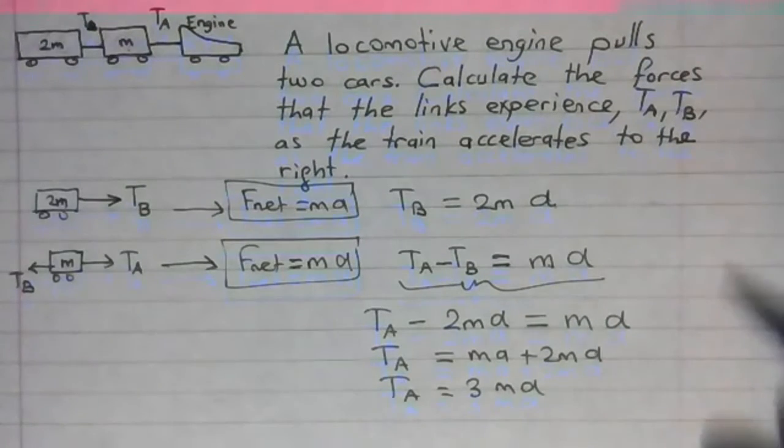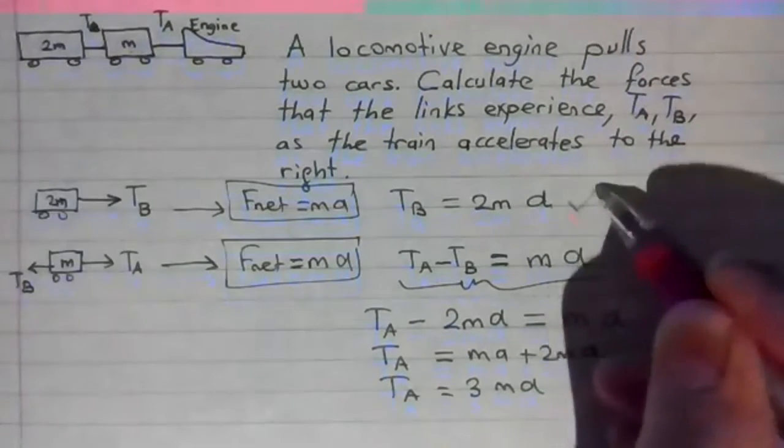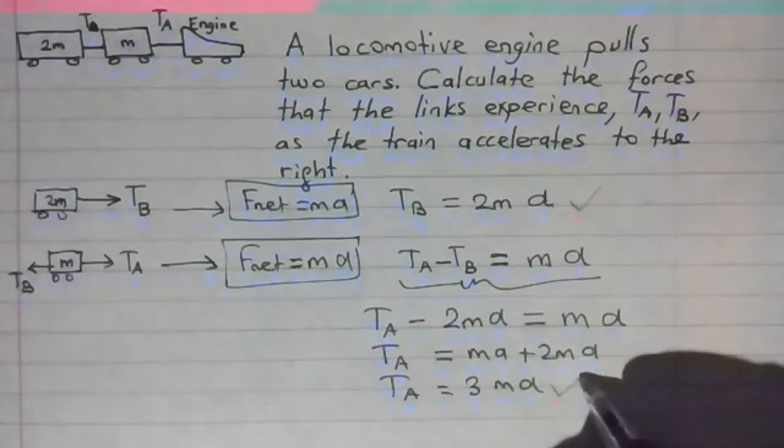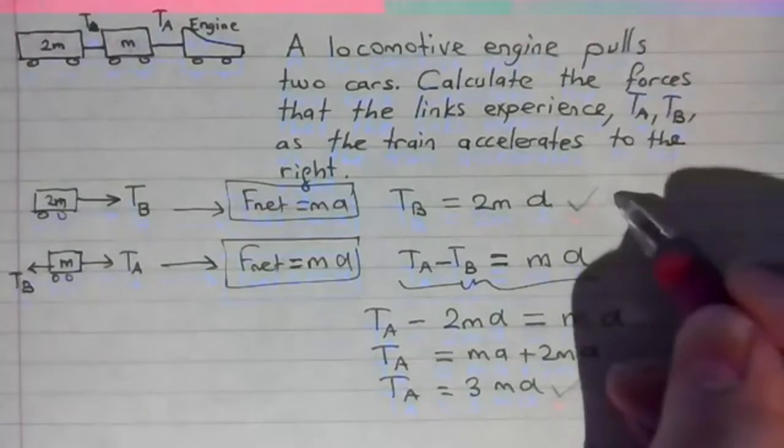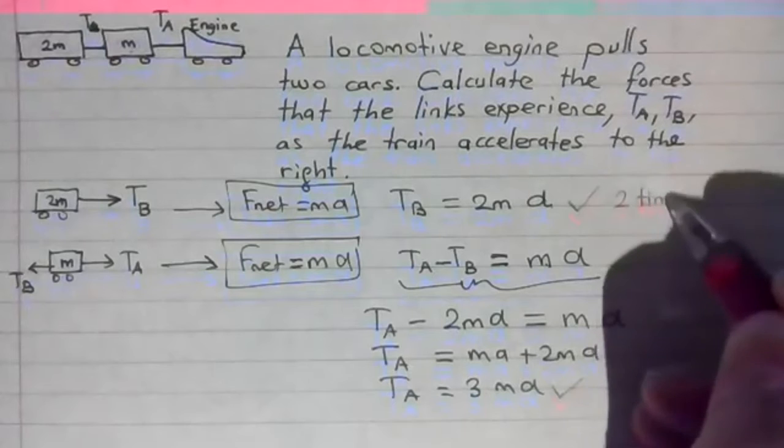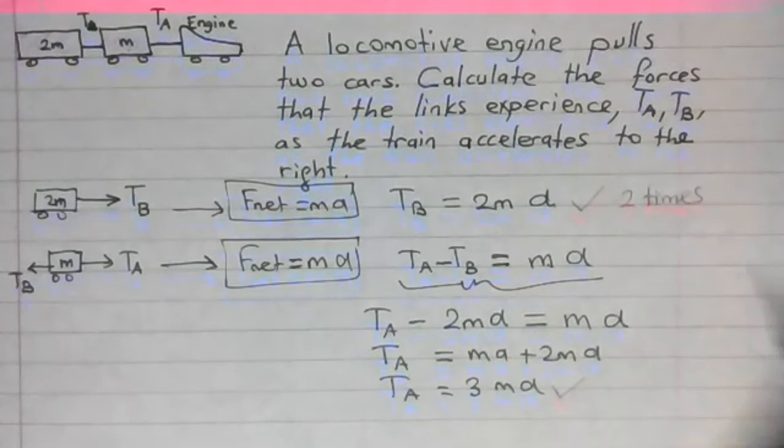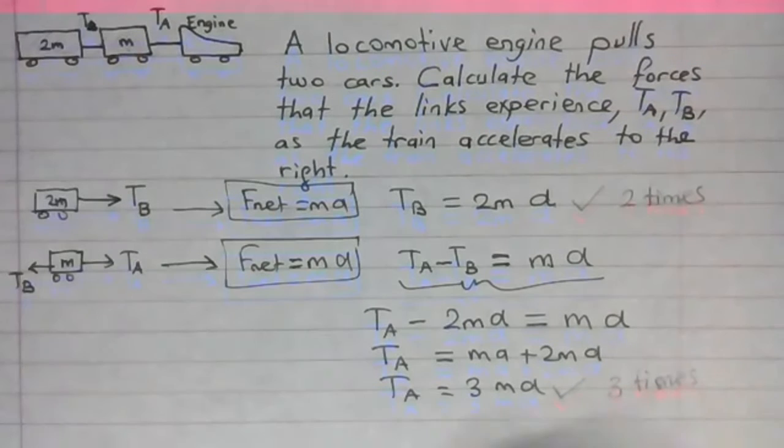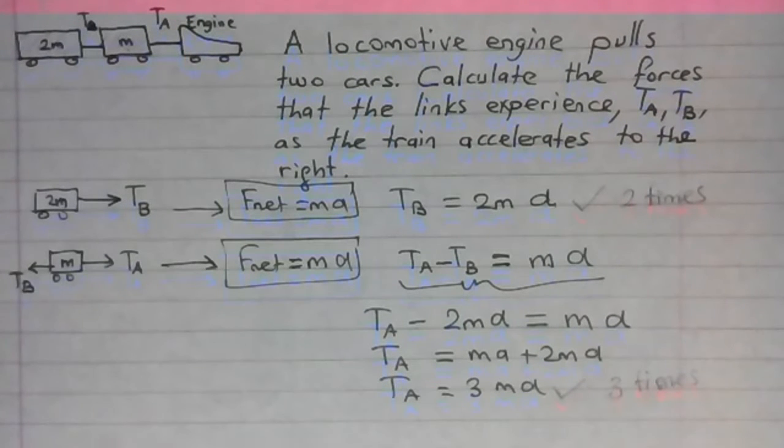Now we know that TB is 2MA and TA is 3MA. That means TA is 3 times bigger. We can compare like this because we don't have numerical values for acceleration and the mass.